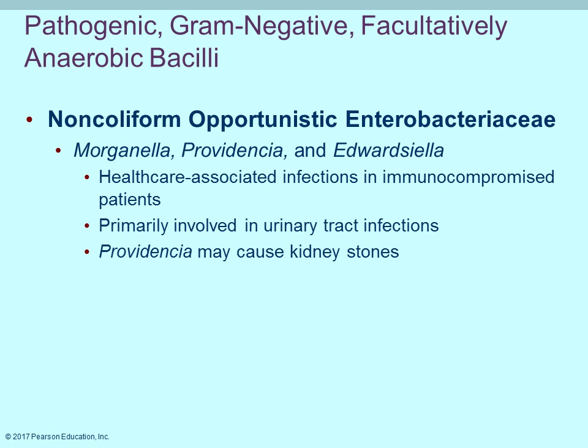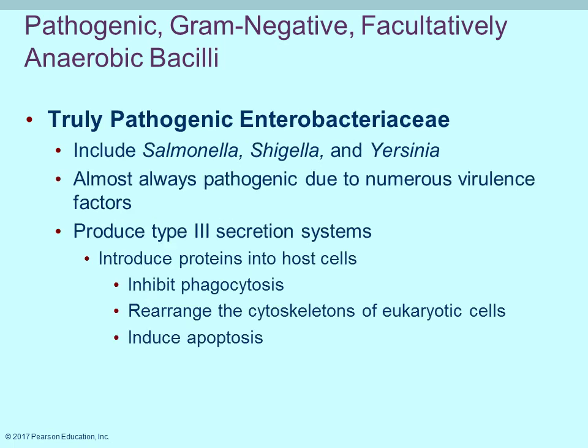The pathogenic Enterobacteriaceae members are true pathogens — they can cause disease even in healthy individuals. The three main ones are Salmonella, Shigella, and Yersinia. They have several virulence factors including secreting enzymes and proteins that interfere with host cells. Some proteins inhibit phagocytosis, allowing bacteria to survive; others rearrange the cytoskeleton and can induce apoptosis, or cell death.